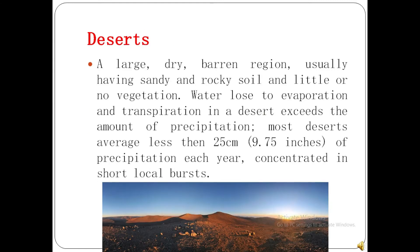Now, what is a desert? A desert is a dead type of area which is completely dry and a barren land. The soil in the desert area is sandy and rocky, and there is almost no vegetation. Water loss through evaporation or transpiration in a desert area exceeds the amount of precipitation, resulting in less rainfall. Most deserts average less than 25 cm of precipitation each year, concentrated in short local bursts.